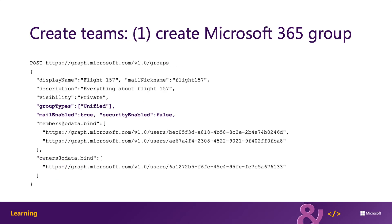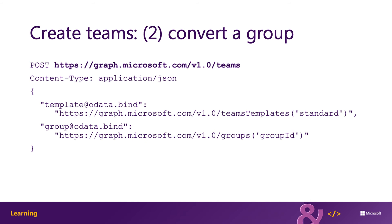To create the group using the Microsoft Graph endpoint, submit an HTTP POST to the group's endpoint with the group's details, as shown in the code sample on the slide. Three things to note: you should set the group types equal to unified, set mail-enabled equal to true, and the security-enabled property to false. Those are all required to upsize a Microsoft 365 group to a team. Notice also that we're setting the members collection and the owners collection, which contain the GUIDs of the object IDs of the users we want to set as owners and members in this group.